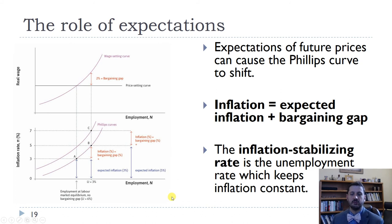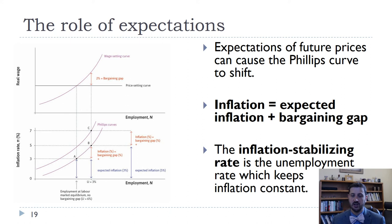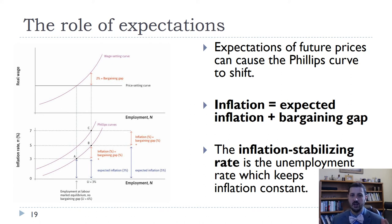What we learned in the 1960s and 1970s was the importance of expected inflation. If firms and workers are expecting a certain level of inflation, they build that into their wage demands and pricing decisions. If they expect 5% inflation, then prices and wages increase by 5% almost automatically. So inflation ends up being equal to expected inflation plus whatever the difference is in the bargaining gap. If we expect 5% inflation and have a 2% bargaining gap due to economic expansion, we actually end up with 7% inflation.